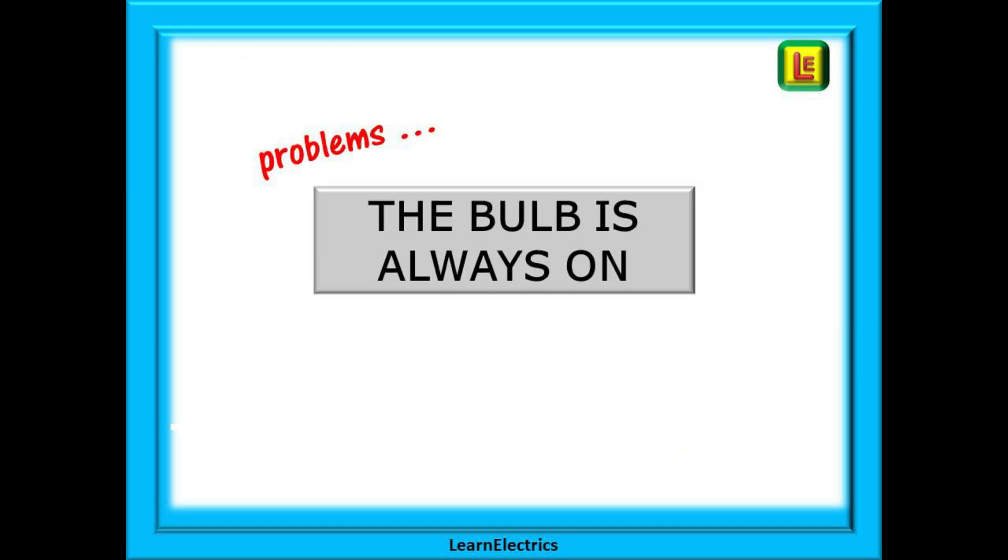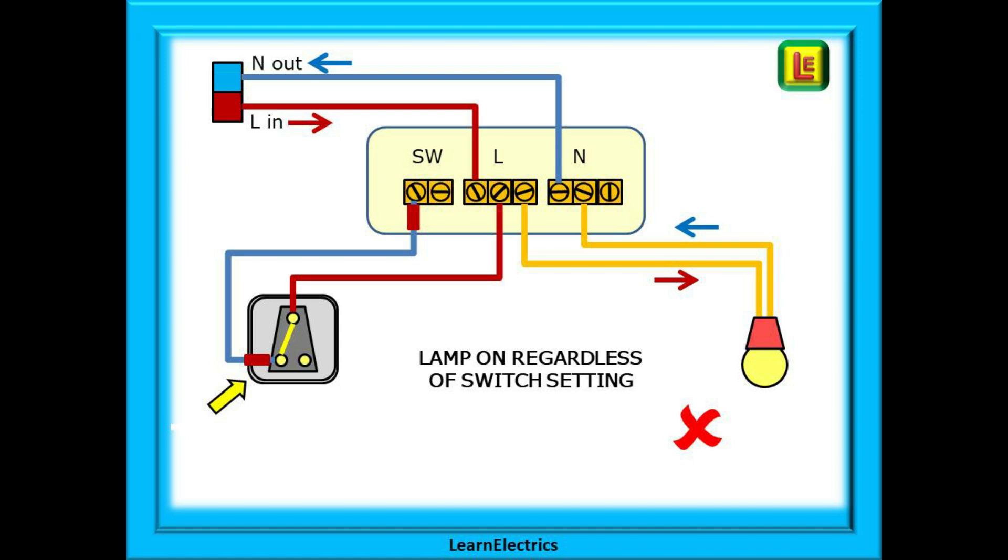Some typical problems now. First the bulb is always on. The lamp, as it is called, is always on regardless of the switch setting.